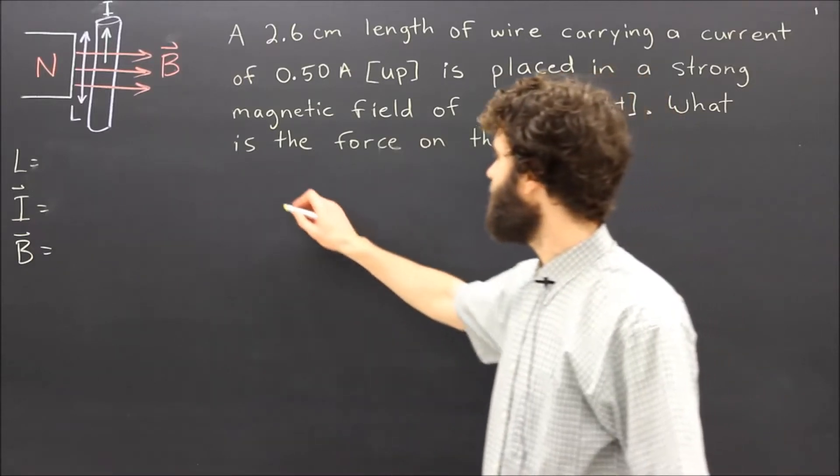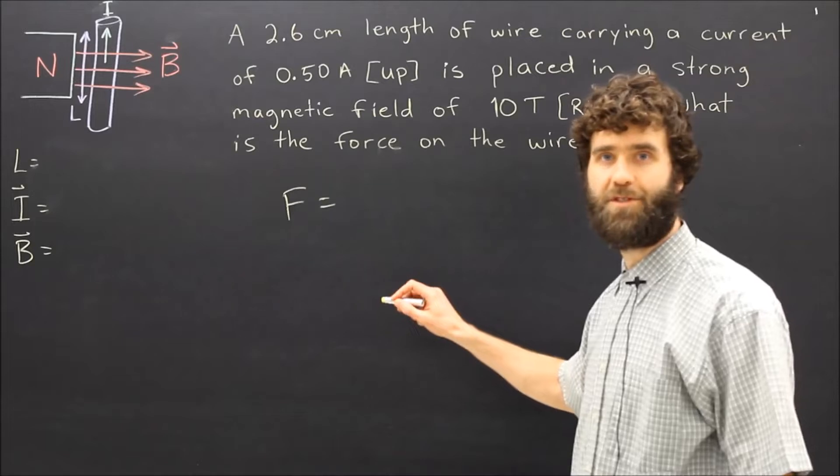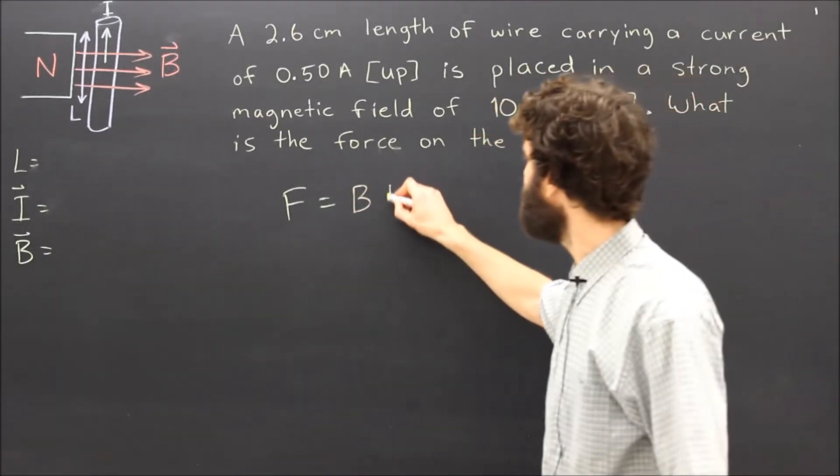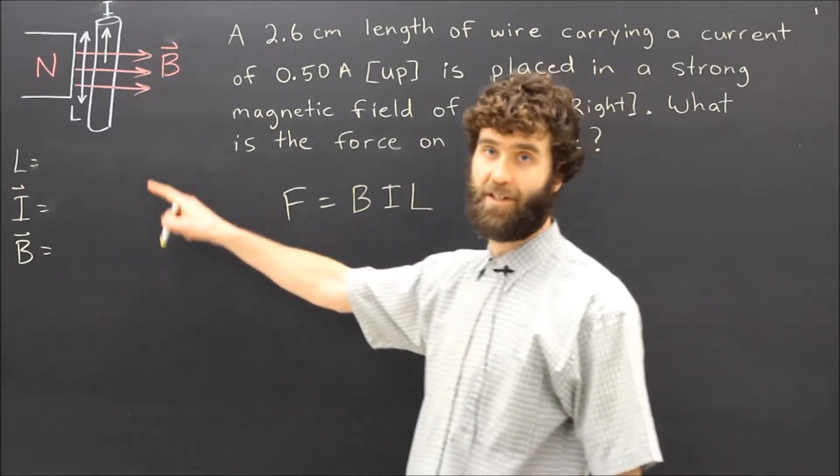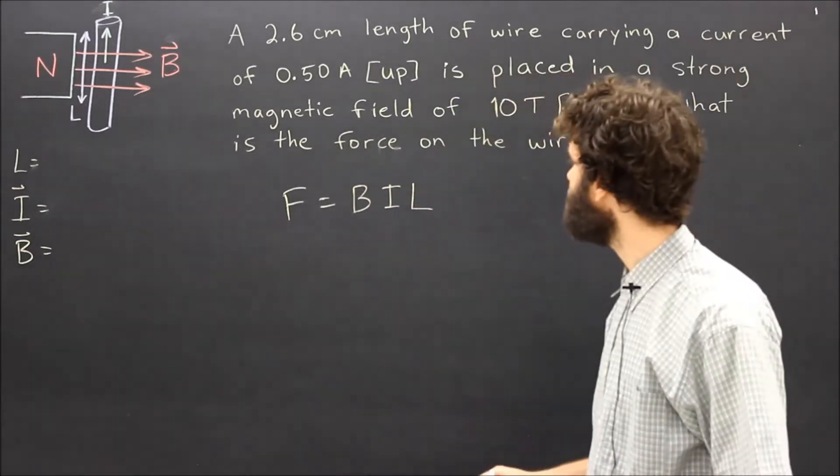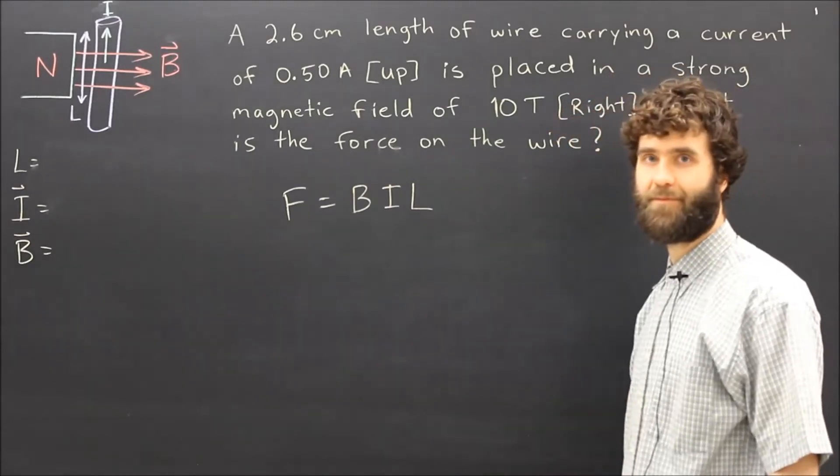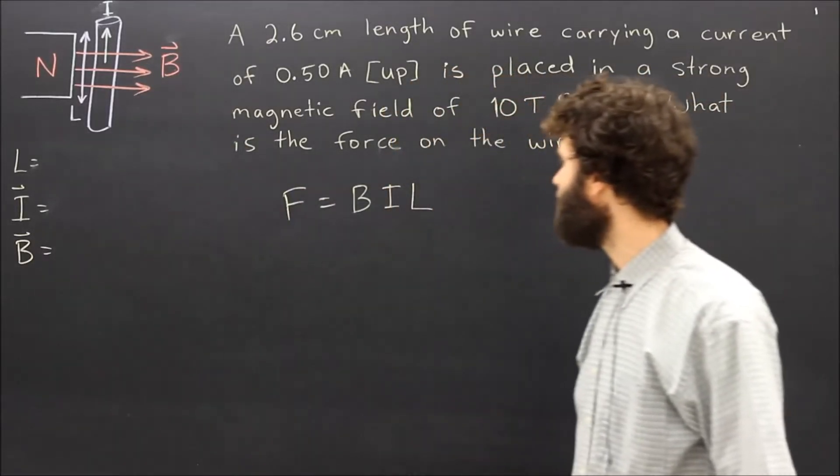The formula we use: force on the wire is equal to the field strength B times the current I times the length of the conductor in the field L.